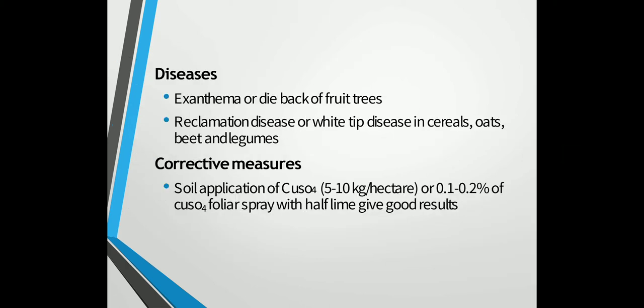Important diseases caused due to copper deficiency are: first, exanthema or dieback of fruit trees, commonly found in citrus, plum, apple and pear. Second, reclamation disease, also called white tip disease, found in cereals, oats, beet and legumes, where the tips of leaves become chlorotic followed by failure of the plants to set seed. It can be corrected by applying 5 to 10 kg per hectare of copper sulphate to the soil, or 0.1 to 0.2% copper sulphate foliar spray with half the lime.